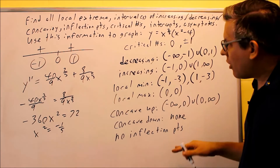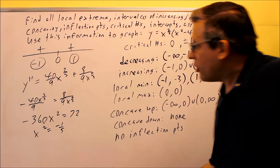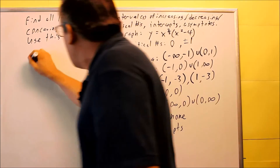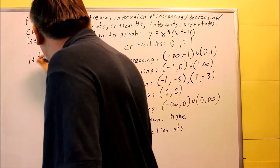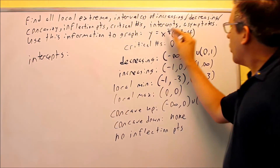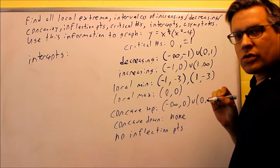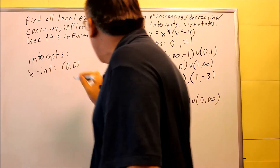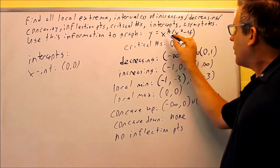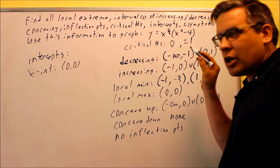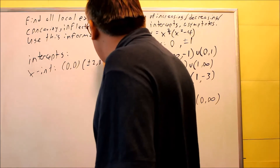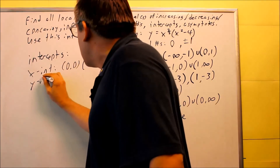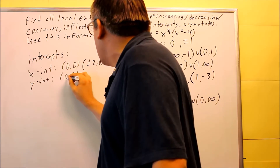The last thing we need before graphing is intercepts. Setting the original function equal to 0 for x-intercepts: x = 0, 0, and if you set the second factor equal to 0 you get x = plus or minus 2, so the x-intercepts are (0, 0) and (±2, 0). The y-intercept is also (0, 0). Now that we have all these points, we're ready for the graph.